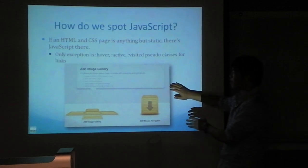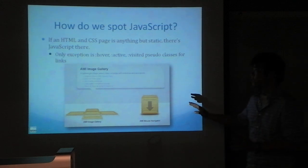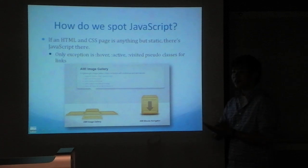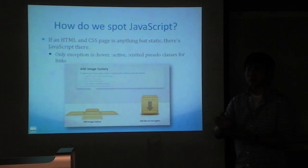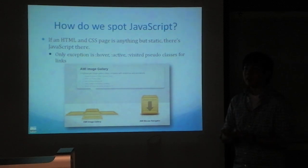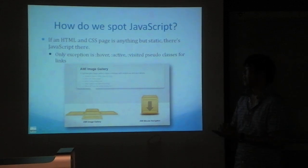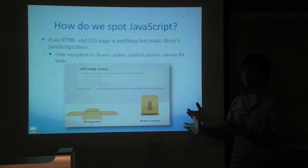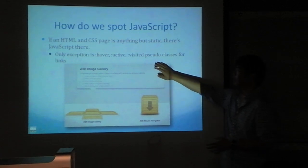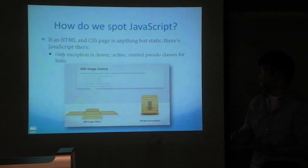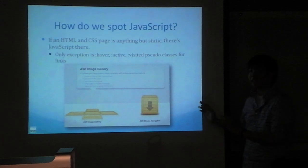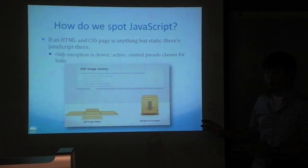We can tell JavaScript is active by the dynamic pages, but there's one caveat. When you hover over links, we have different link states. For example, if you click on a link, that link gets a visited attribute, and you have these pseudo-classes that let you specify those different states of a link. But keep in mind that that itself is not JavaScript — it's strictly CSS.